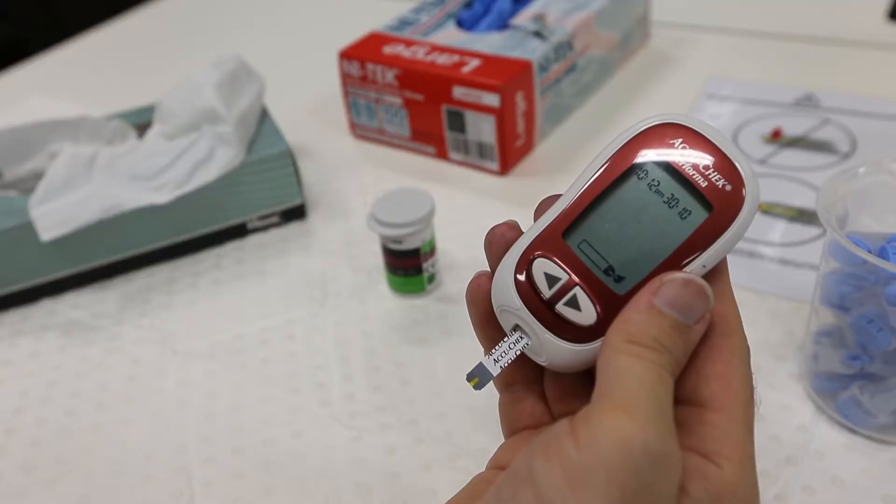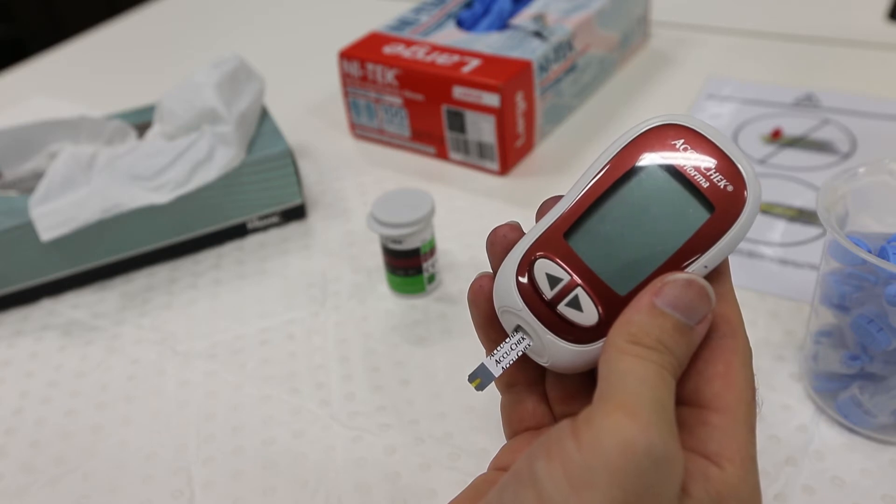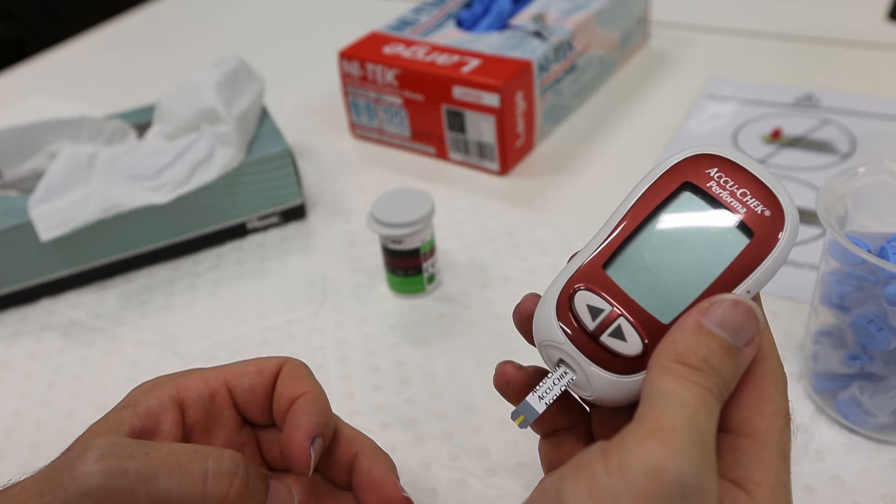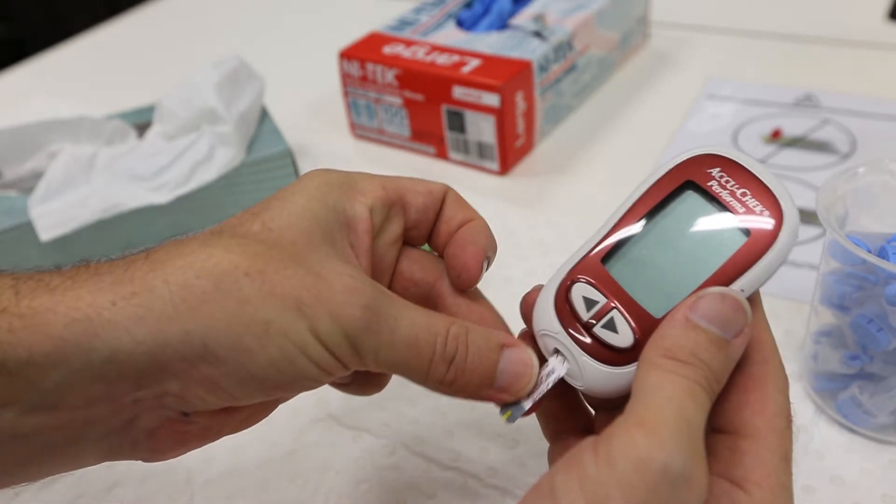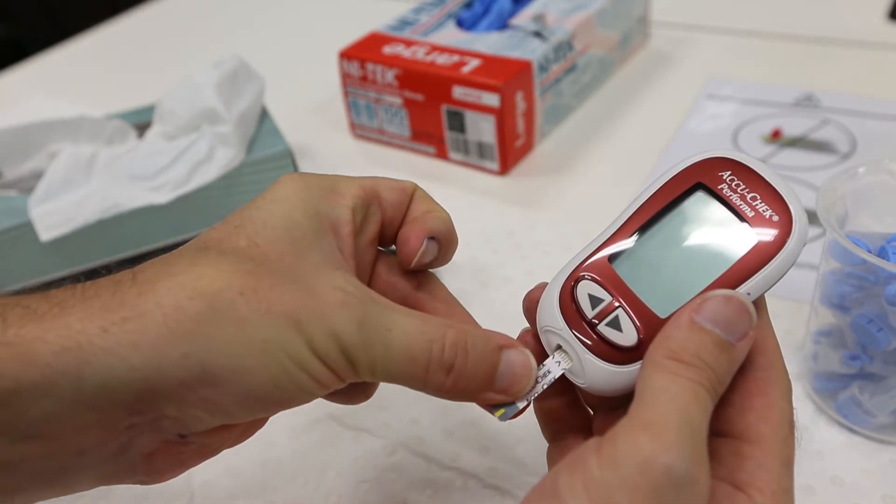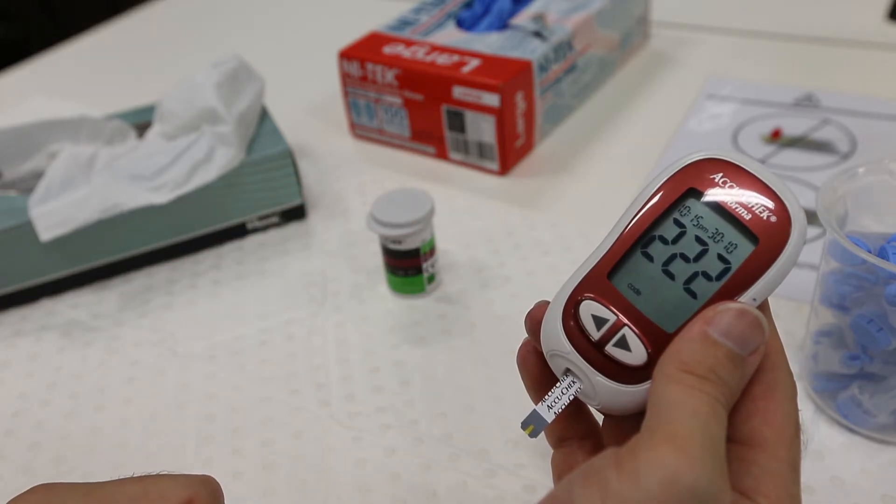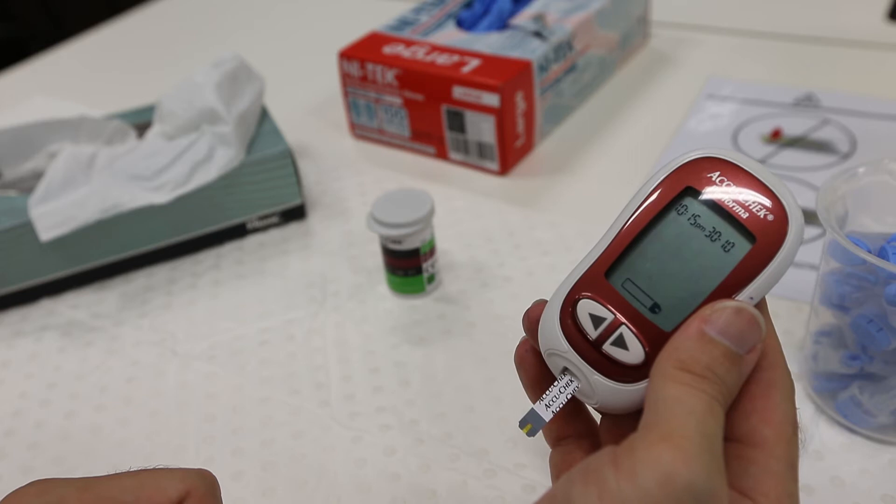After inserting the test strip, the blood glucose meter will switch off in about 30 seconds. If this happens and you have not yet sampled your blood, simply remove the test strip and then reinsert it into the unit. The blood glucose meter will then switch back on, display the code before displaying the ready symbol.